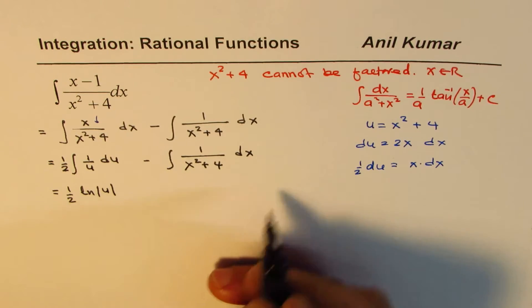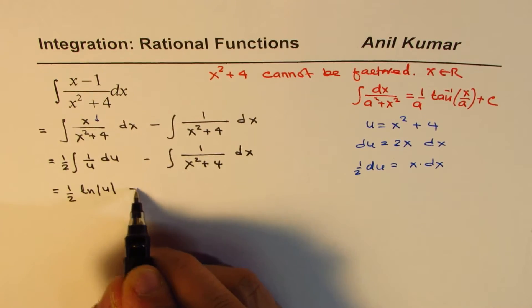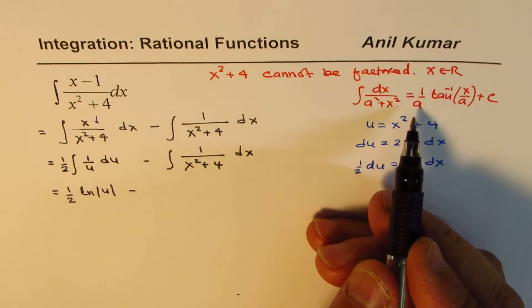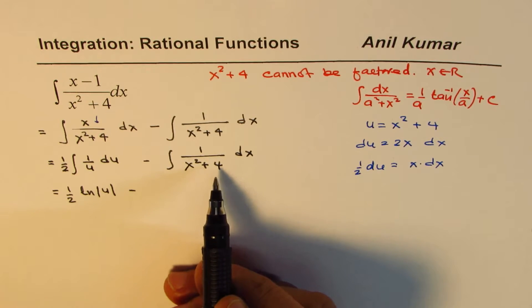Of course, you can add c. We will add at the end minus the integral of this, just apply this formula. So, a is 2 here. This is 2 square.